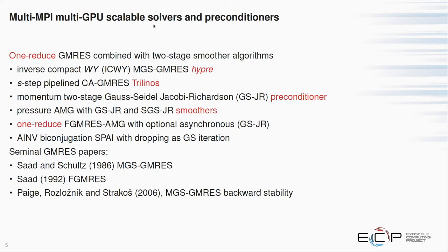Because of the one-reduce ideas, I want to mention the seminal papers of Professor Saad, who is here, and also Miro Rozložník who is attending this meeting. The fundamental work on backward stability from Chris Paige and Miro and Strakoš, and then the FGMRES paper back in 1992. Basically, we're slightly modifying that algorithm to allow for a one-reduce variant.